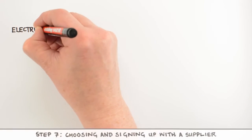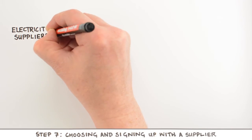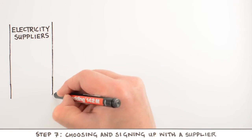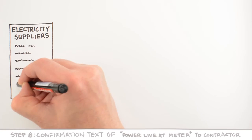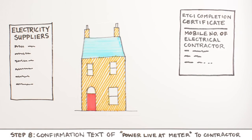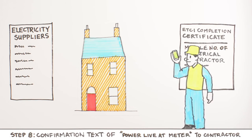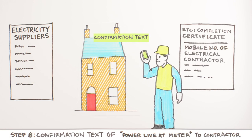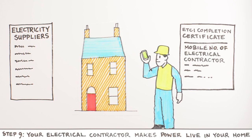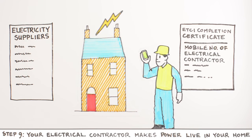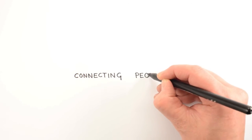You must have signed up with a supplier before final connection can be made by ESB Networks. Once the mobile phone number of your electrical contractor has been supplied on the electrical completion sheet, confirmation that your power is live will be provided by text to your electrical contractor, and your contractor is then responsible for making the live power available to you. To choose a supplier, view a list of electricity suppliers and get ready to get connected. ESB Networks. Connecting people.